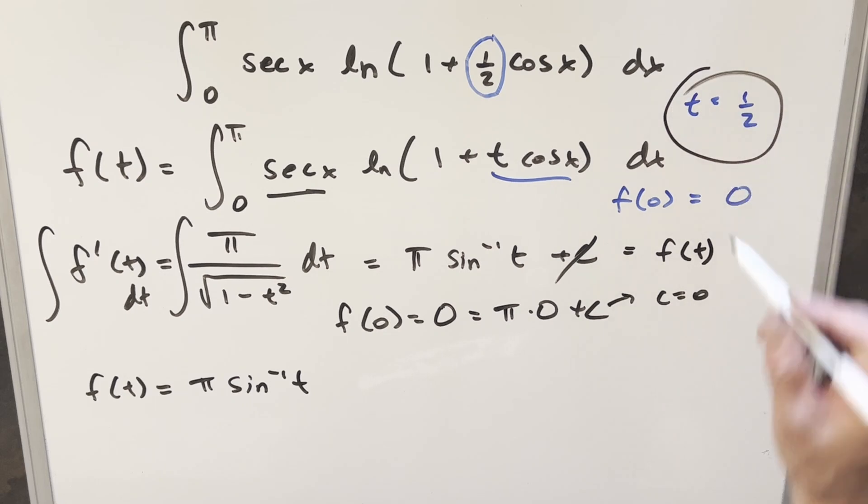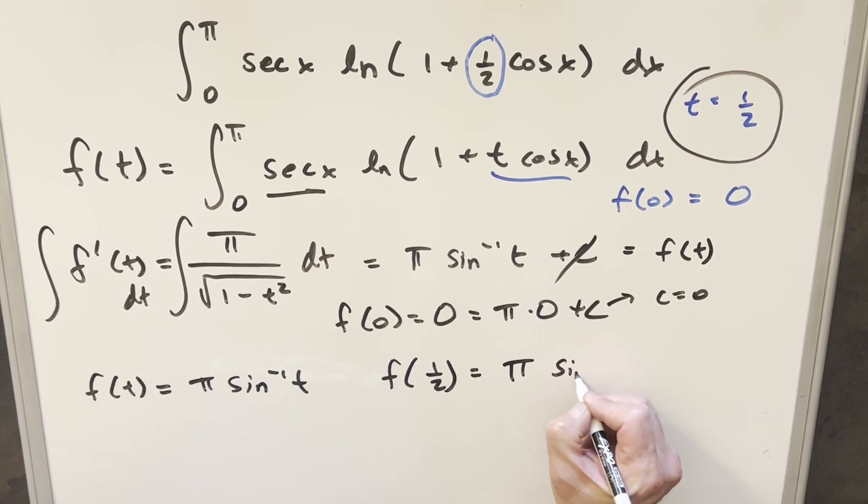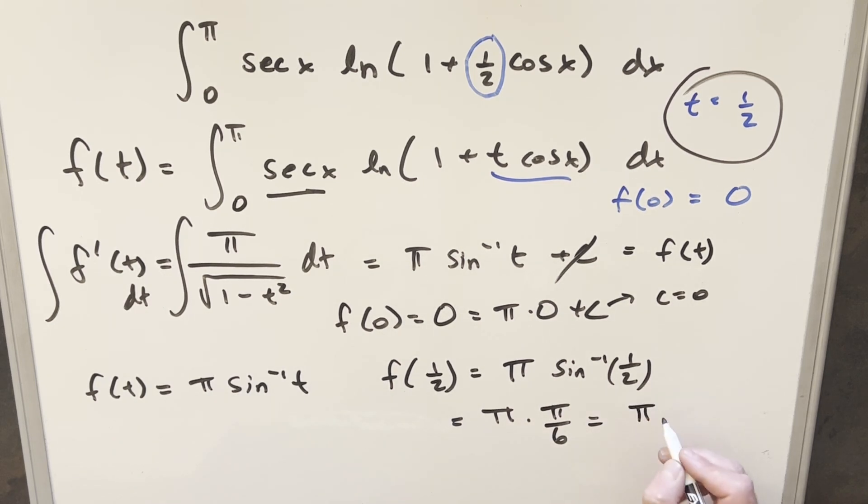So now coming back here, evaluate this thing at one half. We're going to have f of one half is going to be pi arc sine of one half. Arc sine of one half, that's just going to be pi over six. So we have pi times pi over six. For my final solution of this, we have just pi squared over six.